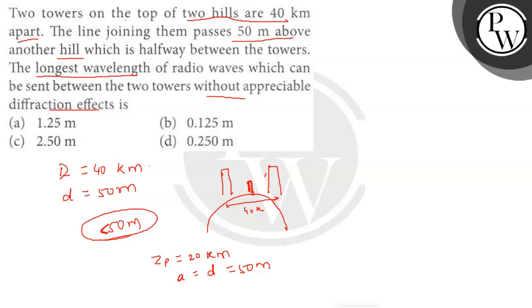The Fresnel distance is given by the relation ZP equals A squared upon lambda, which becomes A squared upon 2 into 10 to the power 4.